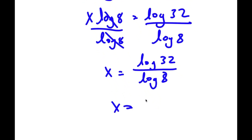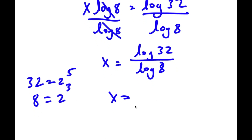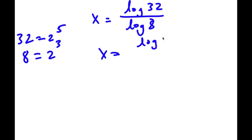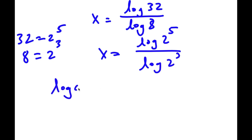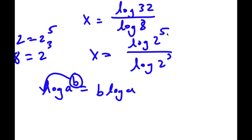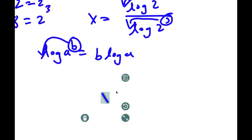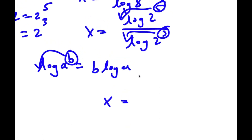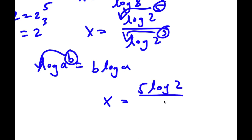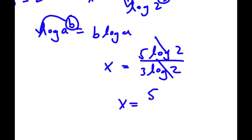Now 32 is the same as 2 to the power of 5, and 8 is the same as 2 to the power of 3. So I have log 2 to the power of 5 over log 2 to the power of 3. Moving the exponents to the front using the log property, this becomes 5 times log 2 over 3 times log 2. The log 2 terms cancel out, leaving x equals 5 over 3.